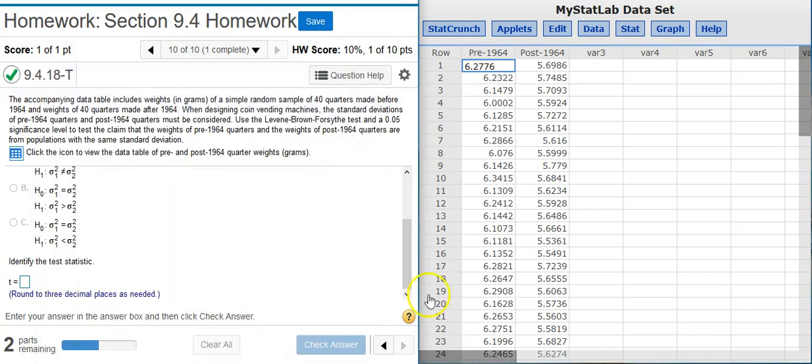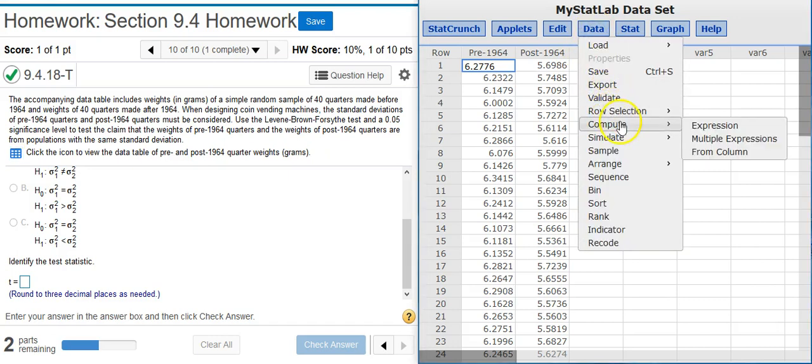I'm going to resize this window so we can see everything just a bit better. Now, here in StatCrunch, the first thing we need to do is transform our data. And when you're transforming data in StatCrunch, you use the menu option Data, Compute, Expression.